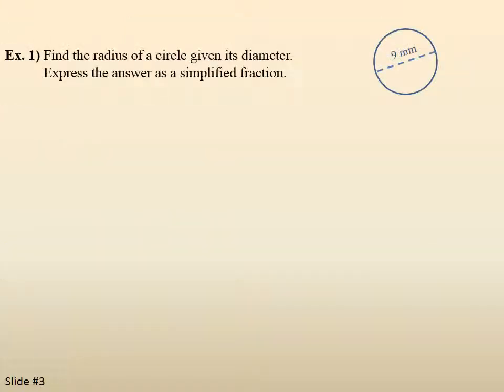Example 1. Find the radius of a circle given its diameter. Express the answer as a simplified fraction. So you can see we have a circle, and the diameter is shown as 9 millimeters. Step 1, write the general formula. Well we know the diameter is twice the radius, or d equals 2 times r.